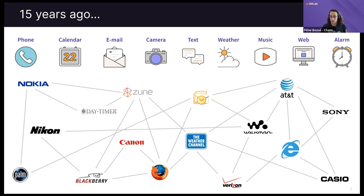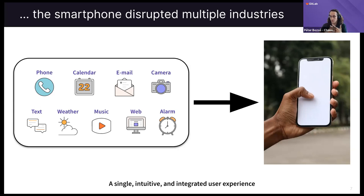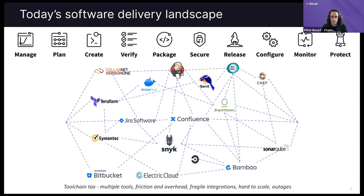The smartphone changed all of that. The whole point of the smartphone was that one device, very flexible, could run many different workloads and integrate them together. Instead of carrying a camera, a watch, a music player, and more, everything melted into one slab of glass in the palm of your hand. GitLab is essentially the smartphone equivalent for DevOps platforms.